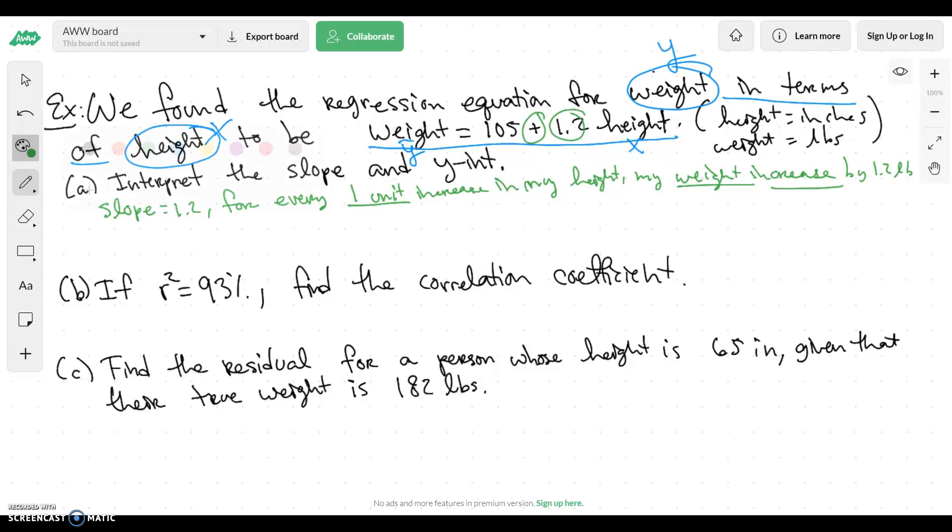Now my y intercept is a little different because my y intercept, what it's saying is where exactly it crosses the x axis. So when x is zero, you're talking about x being zero, what is going on with my y axis? So I have 105.